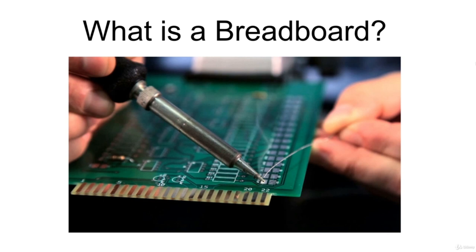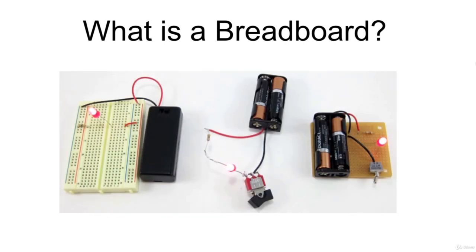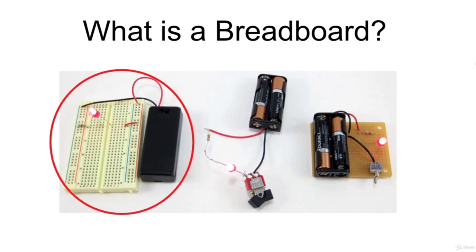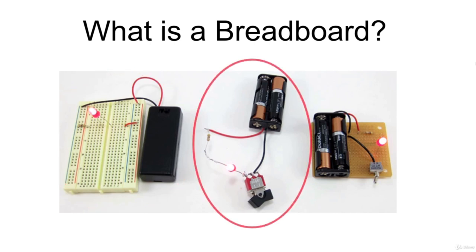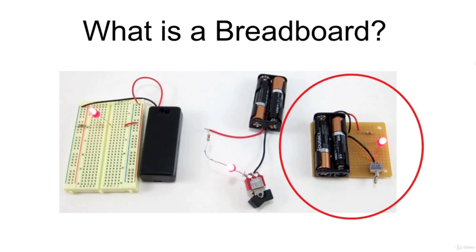Electronic components can be soldered directly together, but more commonly they are soldered onto a printed circuit board. PCBs are what you will see if you take the cover off from many electronic devices, like a computer or a cell phone. This image shows the same circuit built in three different ways: on a solderless breadboard, with components soldered directly together, and on a printed circuit board.